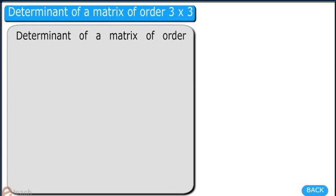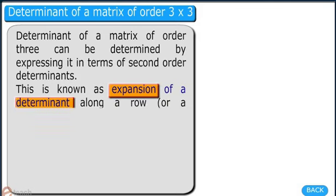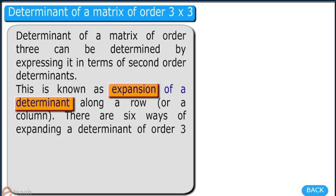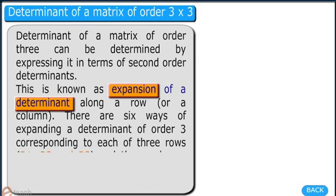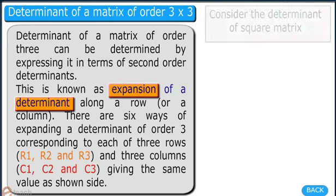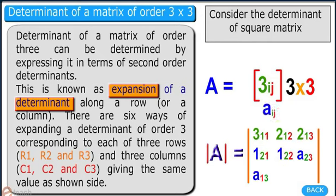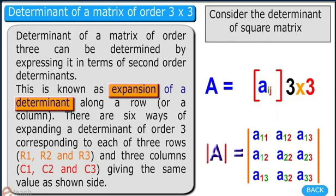The determinant of a matrix of order 3 can be determined by expressing it in terms of second-order sections, corresponding to each of the 3 rows and 3 columns, giving the same value. Let A be a square matrix. Then the determinant of square matrix A can be represented as follows.